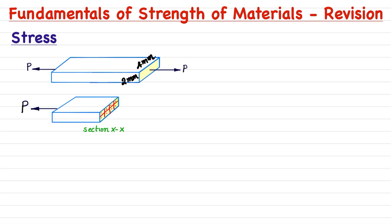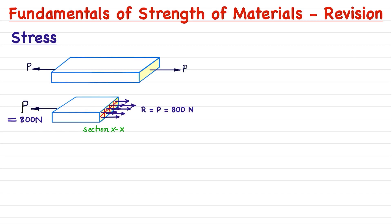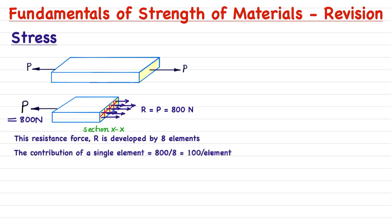If we apply some force P, the same force will be developed and all elements will be involved in developing the resisting force to maintain equilibrium. So if the applied force is 800 newton, all 8 elements will develop a total resisting force of 800 newton. Since 8 elements create 800 newton, the contribution of a single element is 100 newton. Each element has area 1 mm², so the contribution per element is 100 newton per mm². This quantity is basically known as stress — the contribution of a single 1 mm × 1 mm element in developing the resisting force.